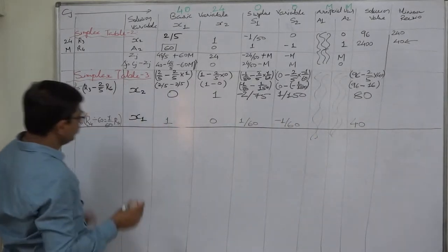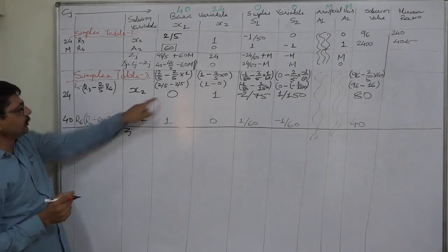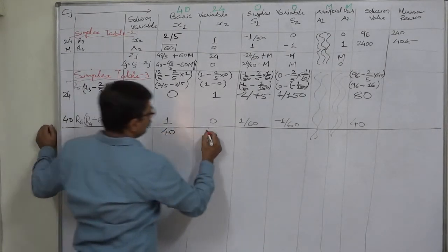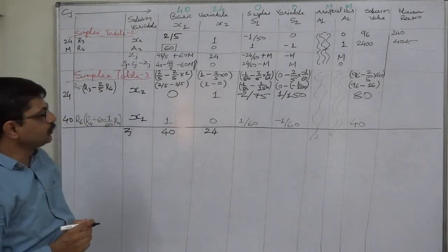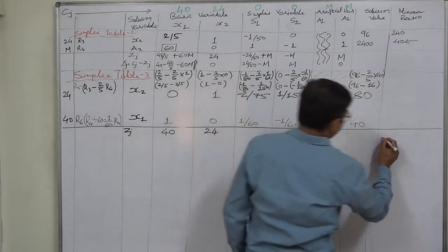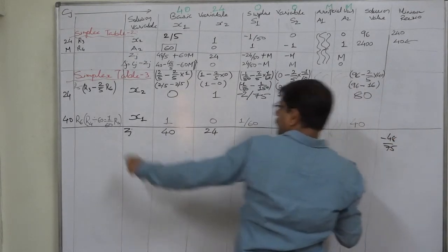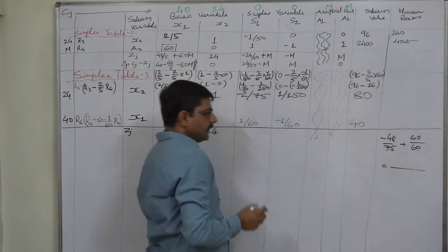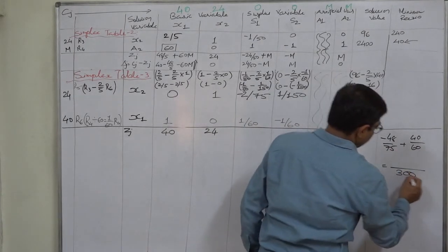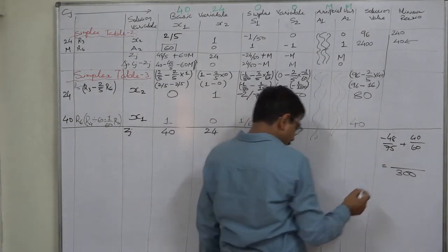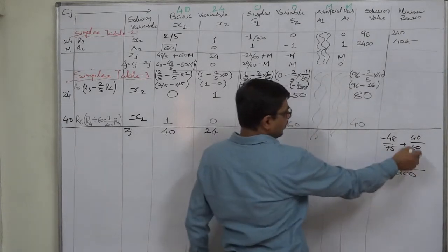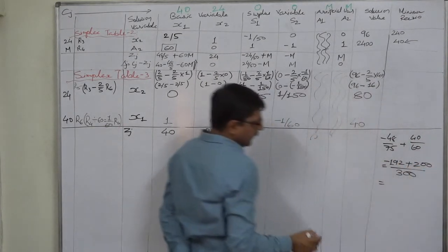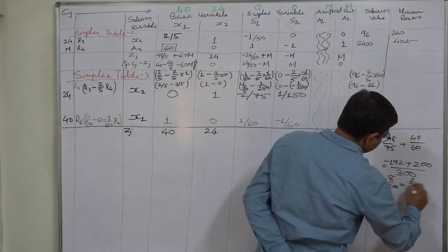Calculating ZJ values: For the first column, 24×0 + 40×1 = 40. For the second column, 24×1 + 40×0 = 24. For the next column: 24×(−2/75) + 40×(1/60). Taking LCM as 300: (−192/300) + (200/300) = 8/300 = 2/75 (positive).